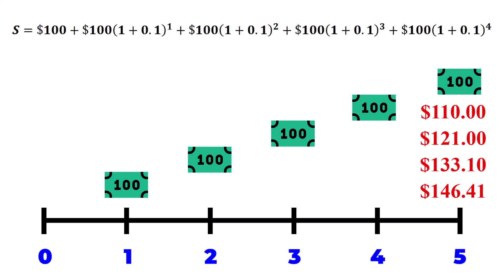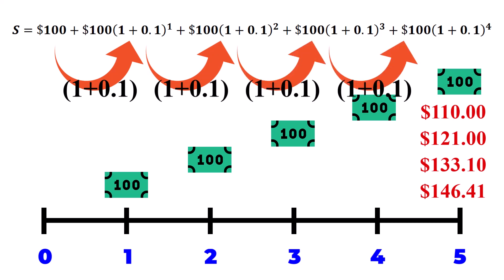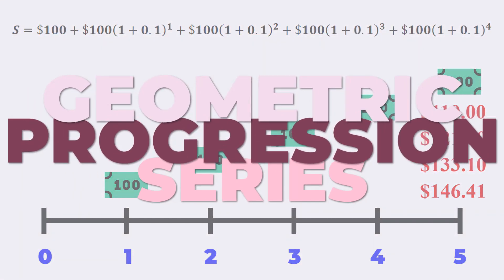Notice how each term, after the first, is formed by multiplying the preceding term by a constant factor. For example, the second term is formed by multiplying the preceding term of 100 by a factor of 1 plus 0.1. And the third term is formed by multiplying the second term again by a factor of 1 plus 0.1. And so on. Whenever a set of terms follows this rule, where each subsequent term is obtained by multiplying the preceding one by a constant factor, it is referred to as a geometric progression series.